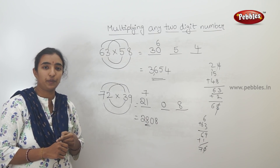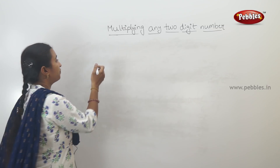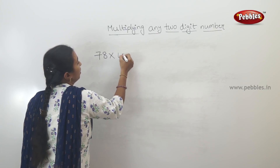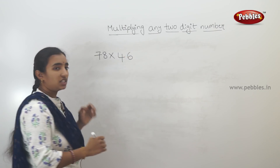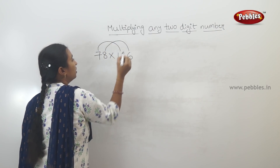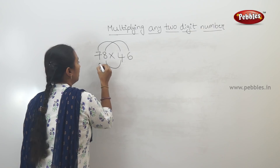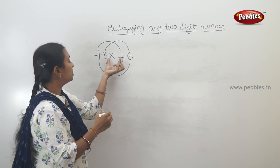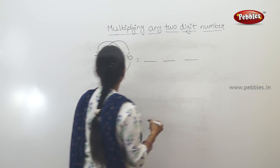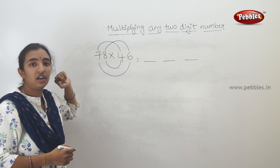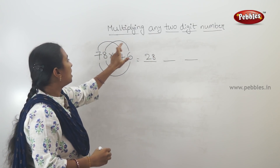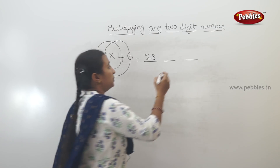Let's give you another example: 78 into 46. Working through: 8 below 40 is 80s. Next, 80 is 60. 40 is 80s.